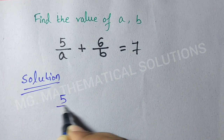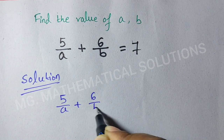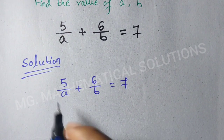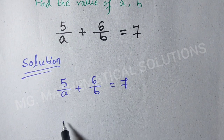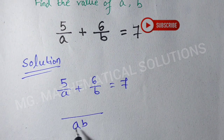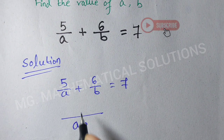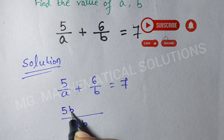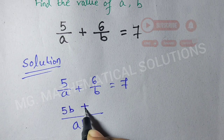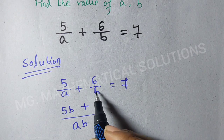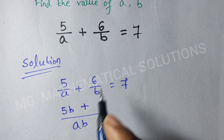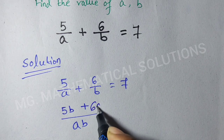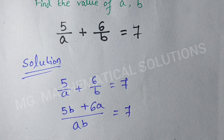We have 5/A plus 6/B equal to 7. The LCM of A and B is AB. So AB divided by A gives B, meaning 5 times B is 5B. And AB divided by B gives A, so A times 6 is 6A, equal to 7.